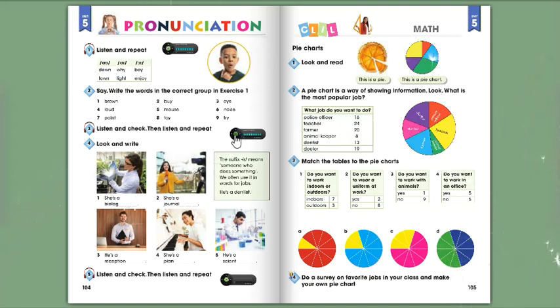Unit 5, Lesson 4, Page 104, Exercise 3. Listen and check, then listen and repeat. Ow: Brown, Loud, Mouse. Eye: Buy, Try. Oy: Noise, Point, Toy.